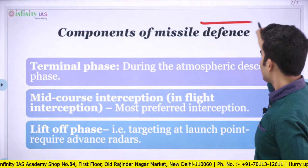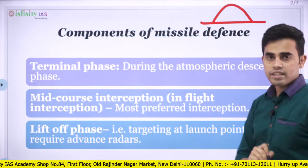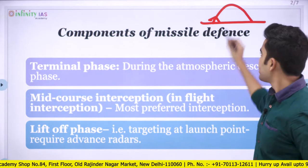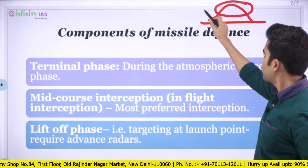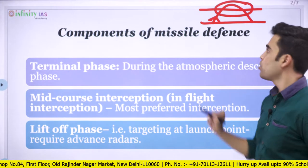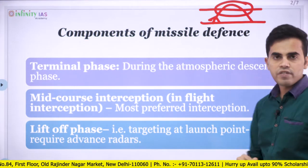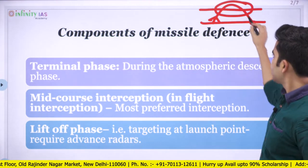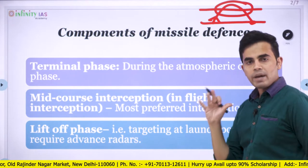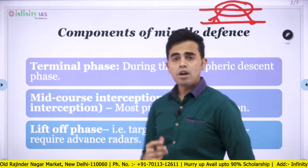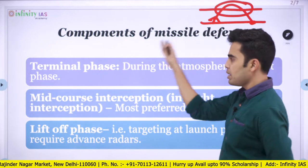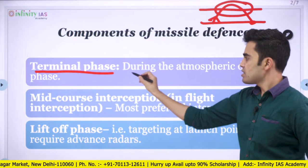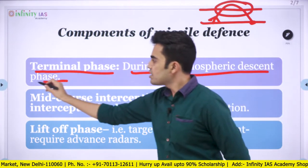A ballistic missile follows a ballistic trajectory — there is a liftoff from the surface, then the flight path. It can go above the level of the atmosphere and fall back into the atmosphere before finally striking the earth's surface. So we can see there are three parts to the flight path of a ballistic missile, and the components of missile defense can be classified accordingly.